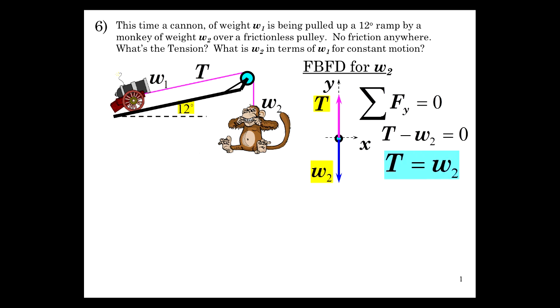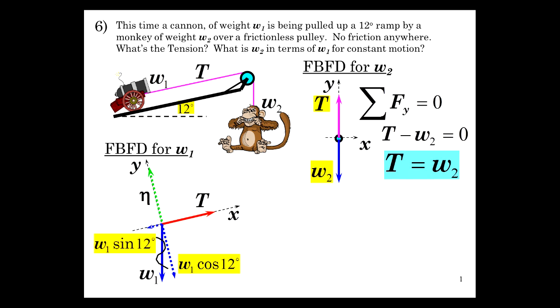Free body for weight one, the cannon. We've got that 12 degree angle, x and y. The tension acts along the x direction, so we're rotating the coordinate system. Weight one points straight down, normal in the y direction. We're going to break weight one into its components, w1 cosine of 12 and w1 sine of 12. Sum of the forces in x is zero because there is no acceleration, constant motion.